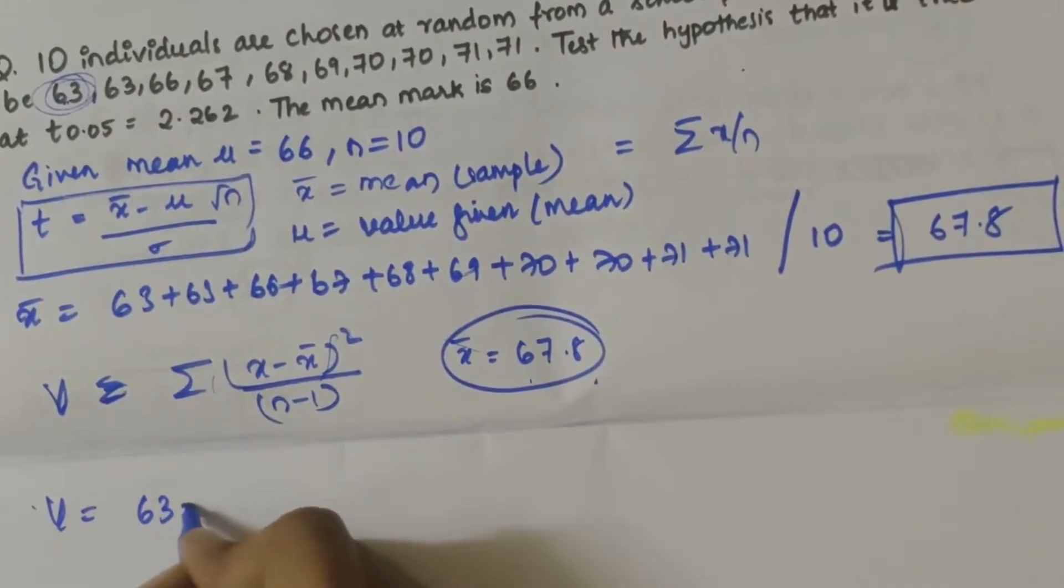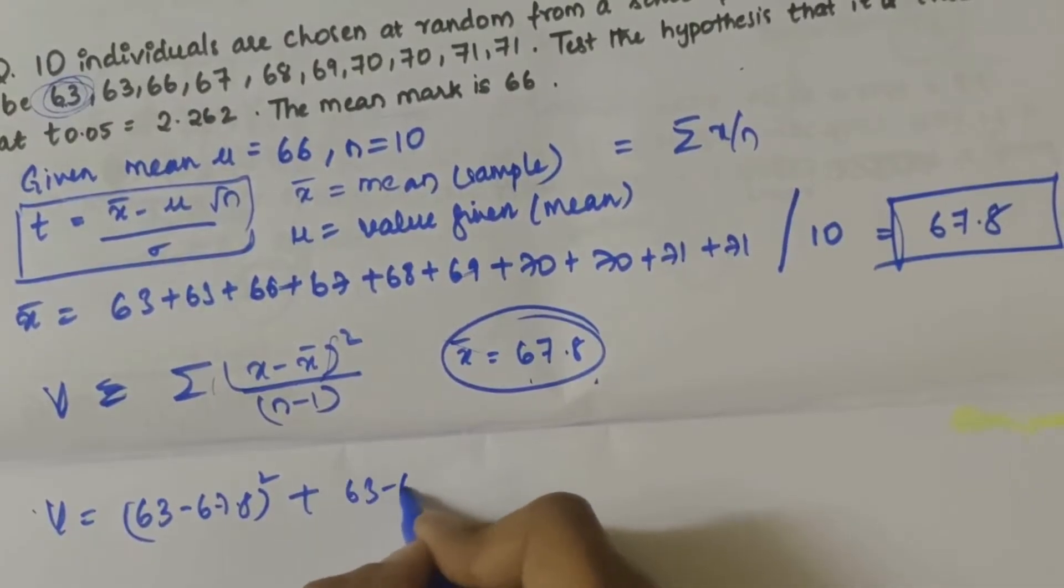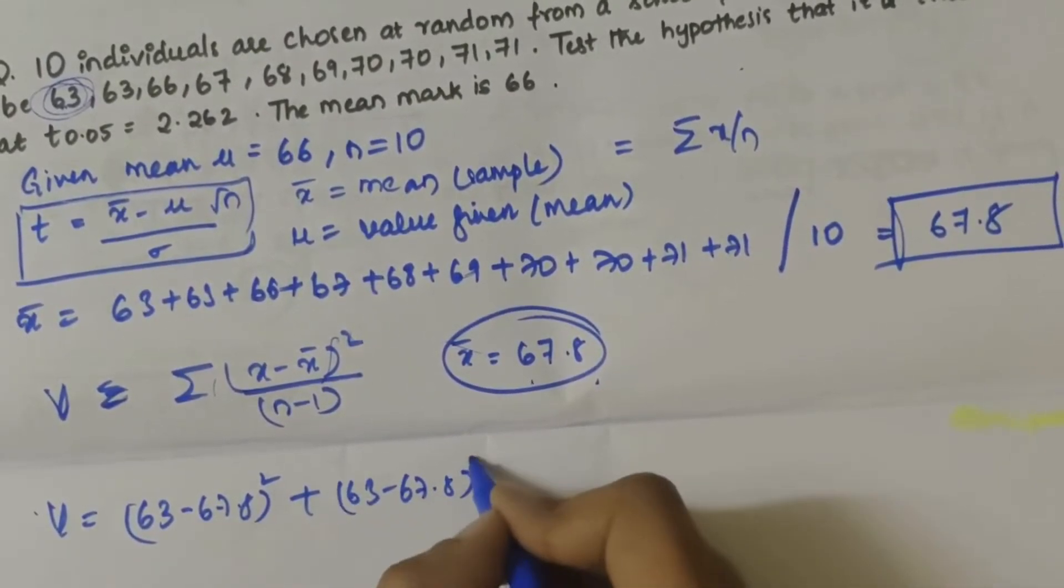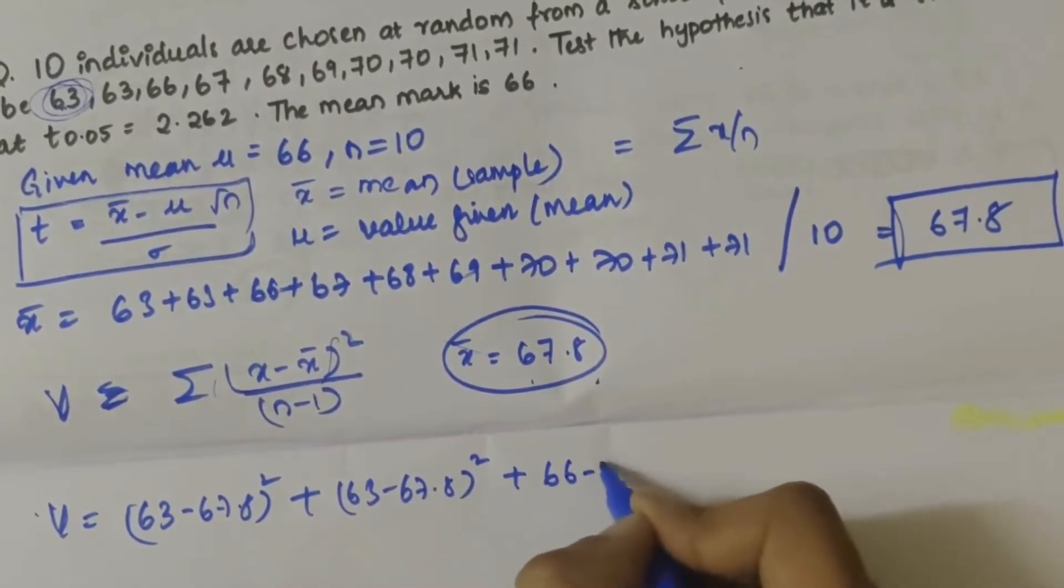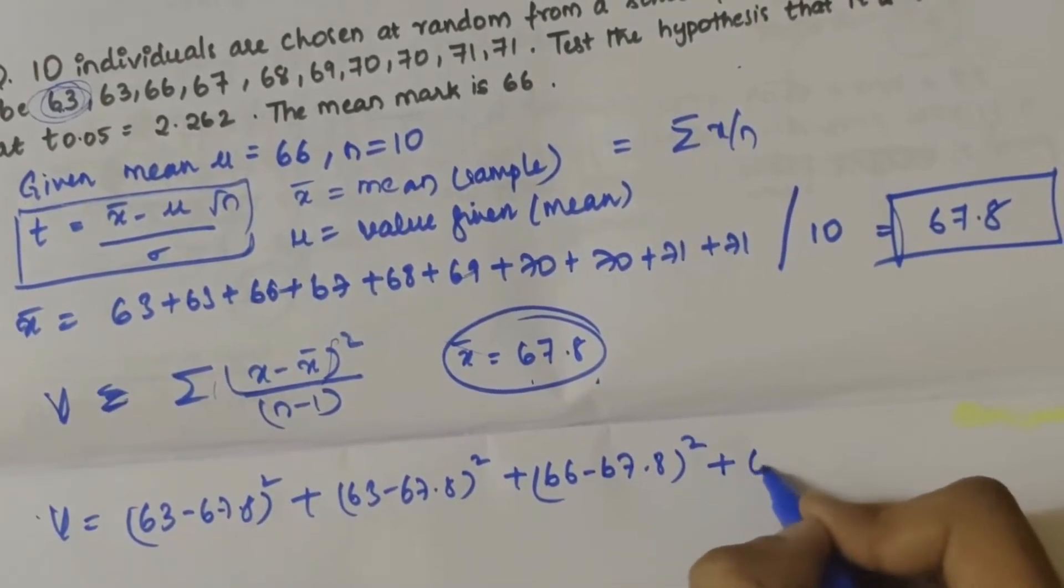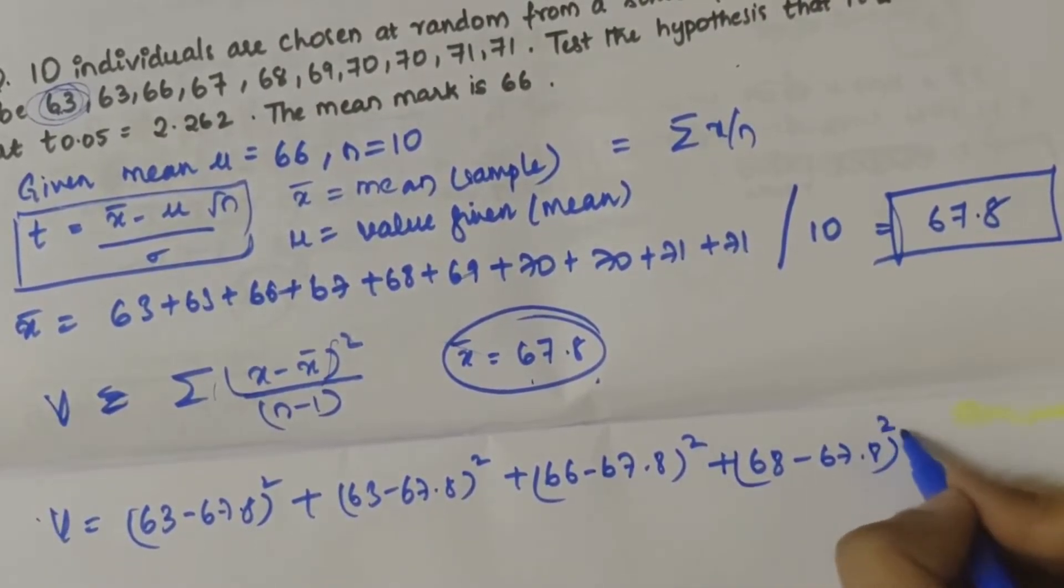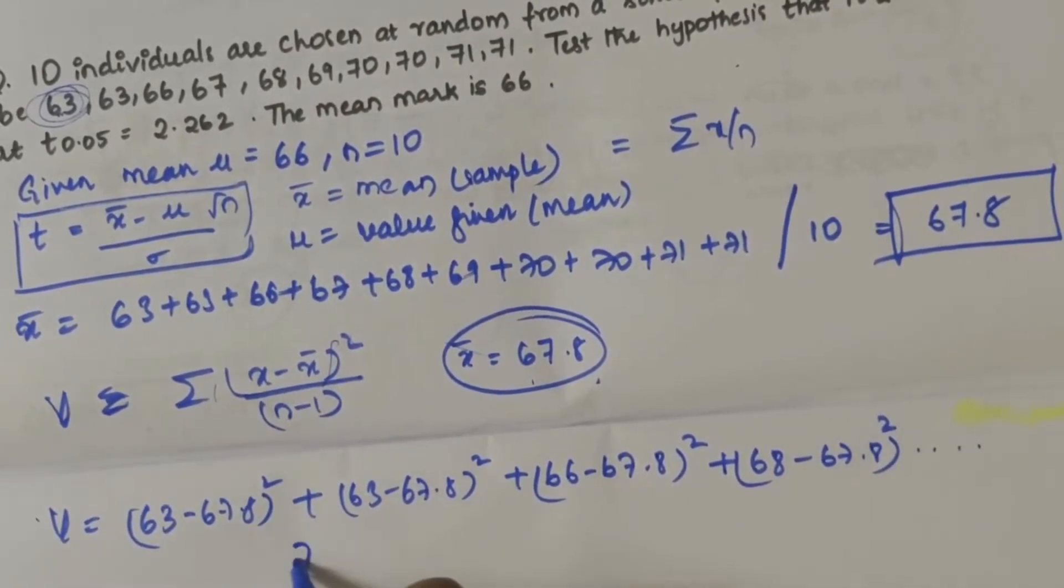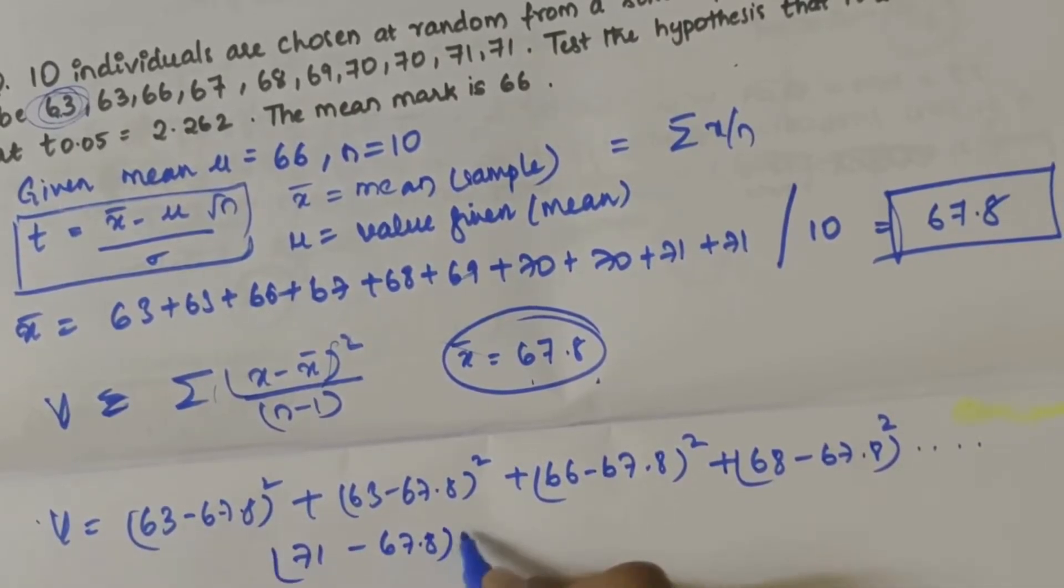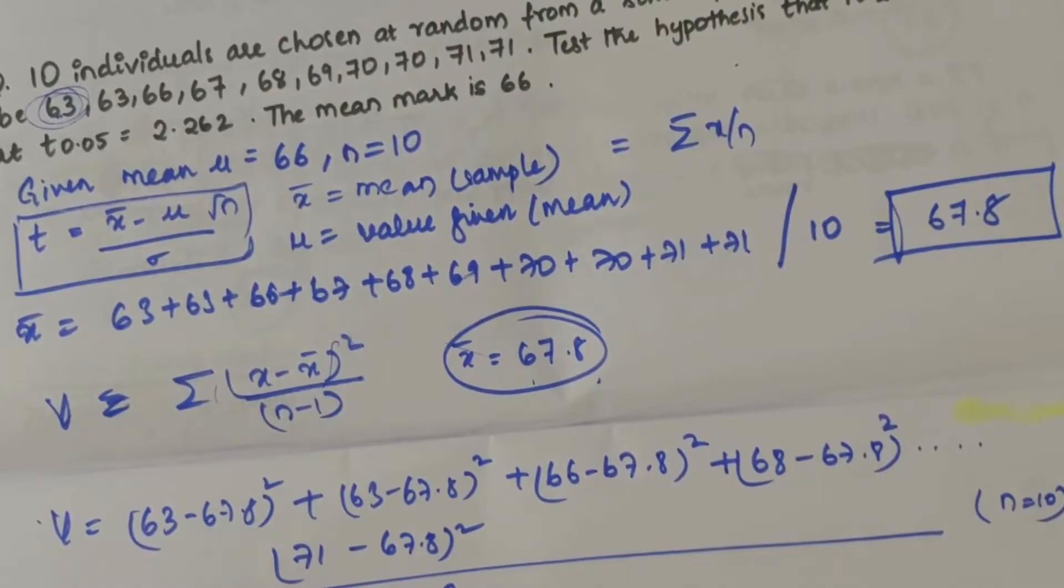So V would be (63 minus 67.8) squared plus (63 minus 67.8) squared plus (66 minus 67.8) squared plus (68 minus 67.8) squared and so on, divided by n minus 1. n is 10 so n minus 1 is 9.